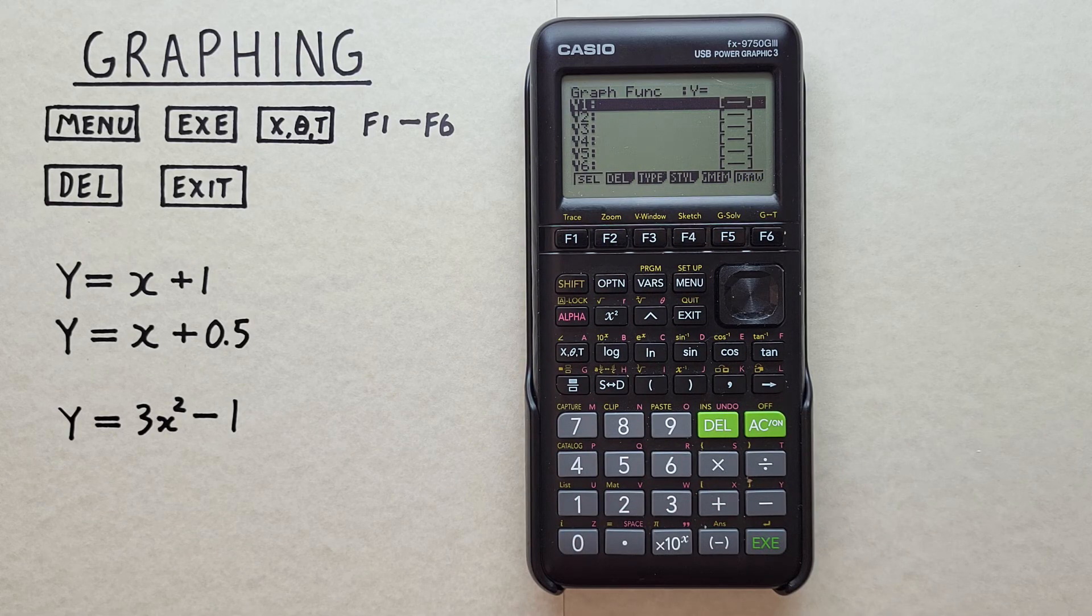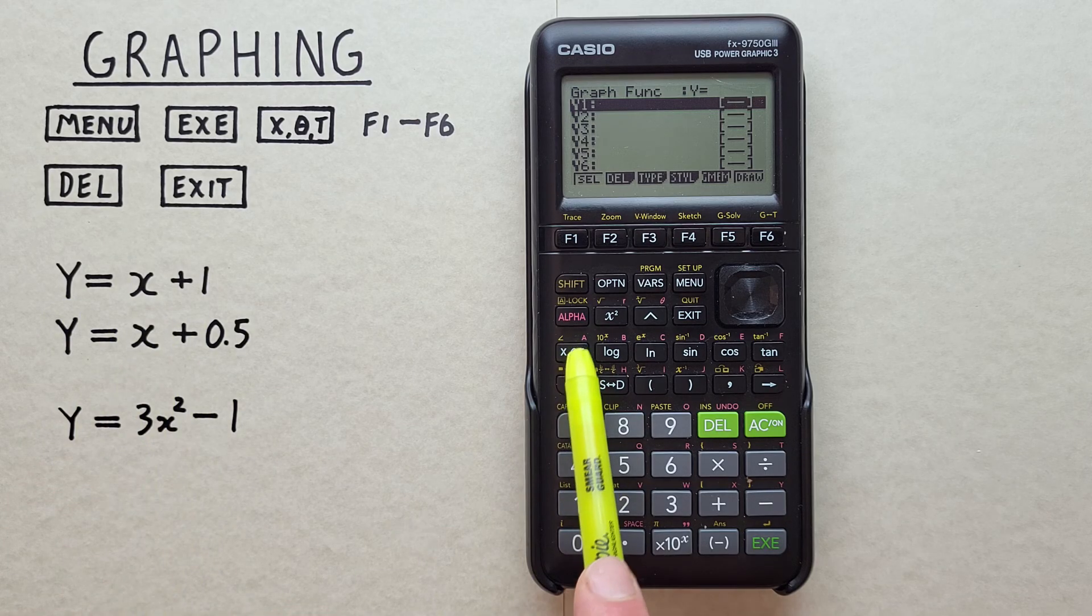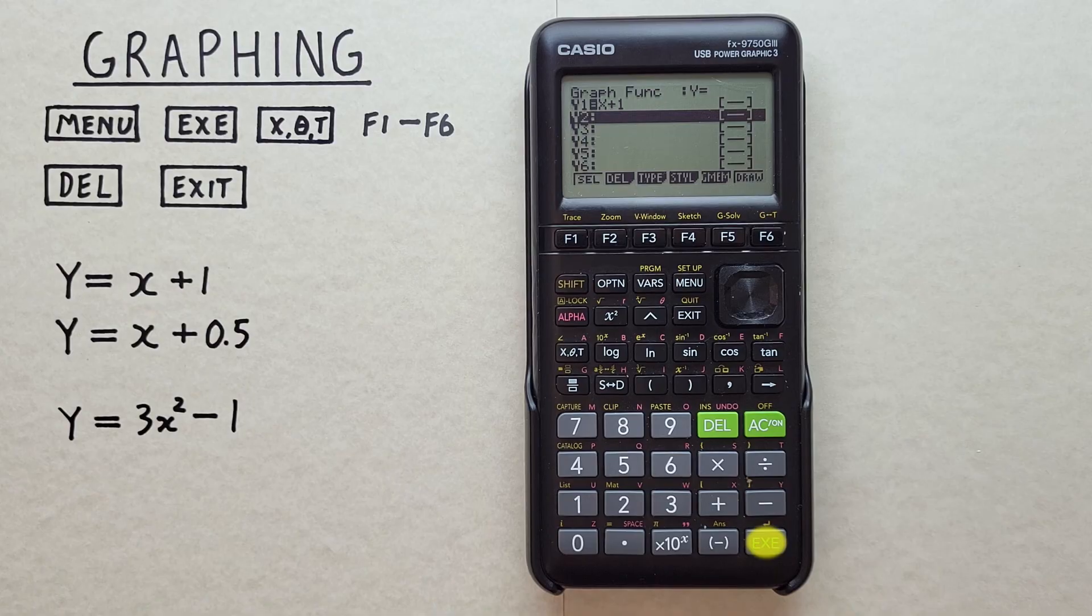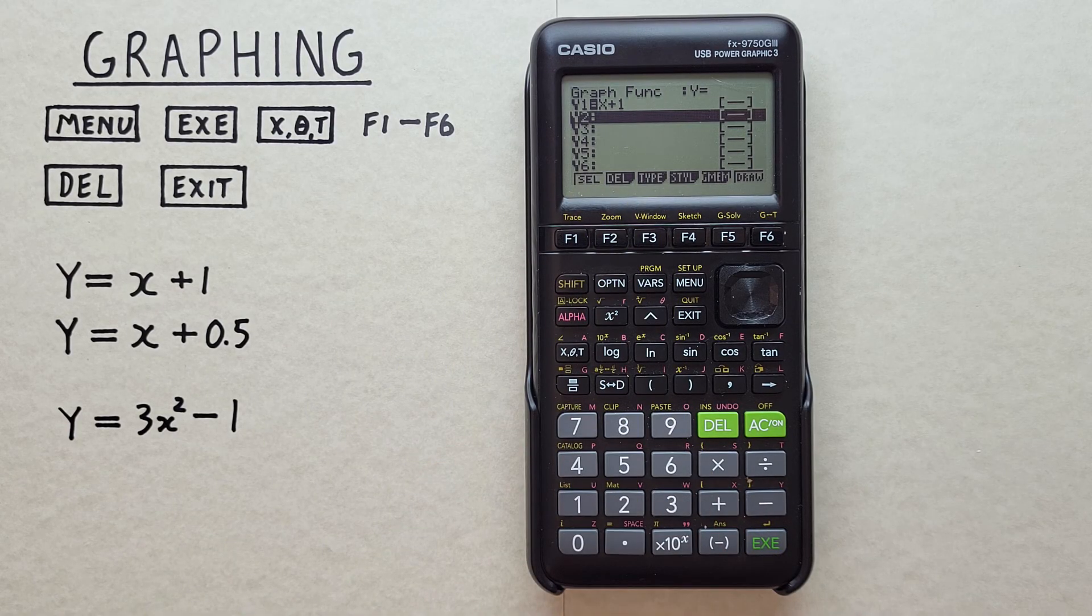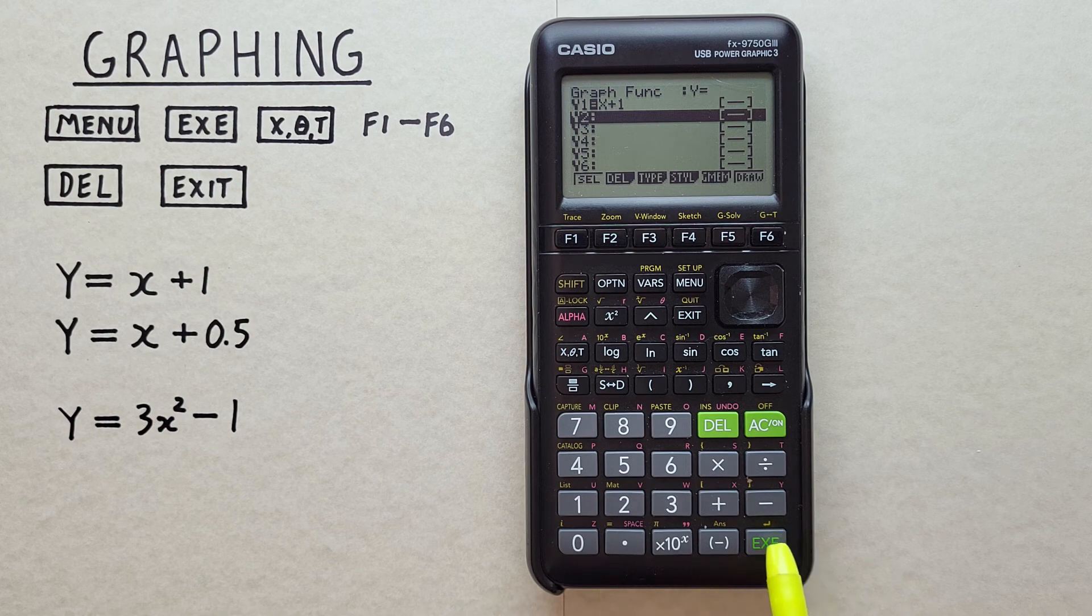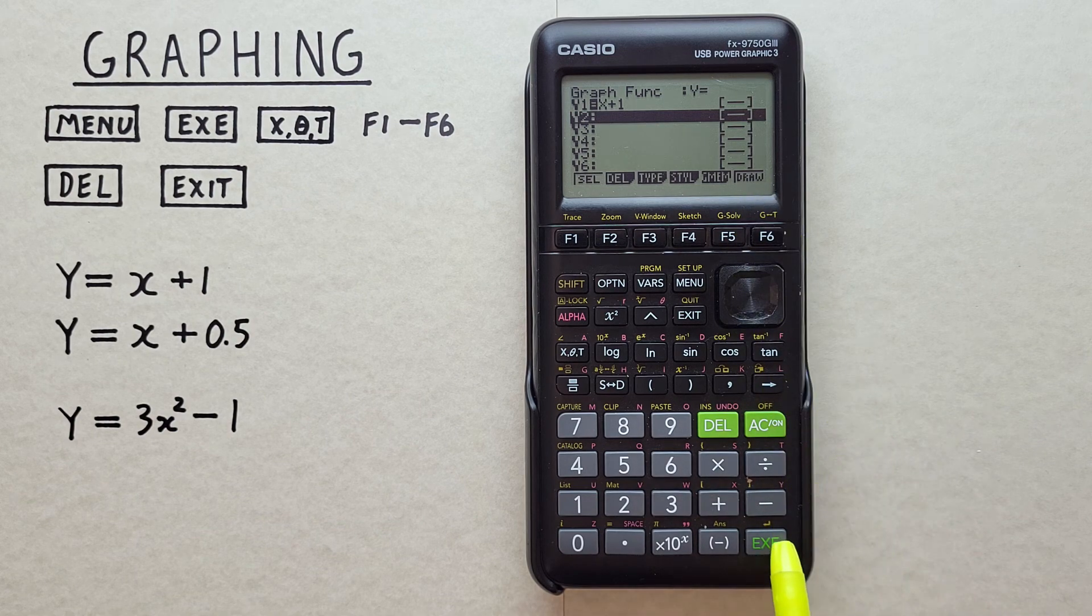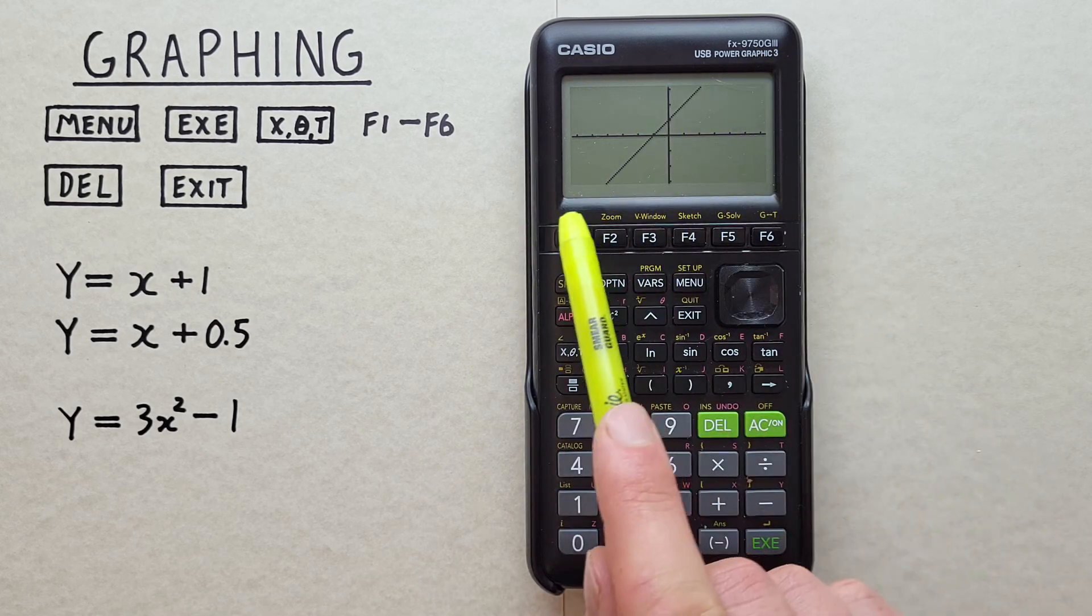We'll start by entering a simple line of Y equals X plus one. So to do that we use the X key here, plus one, and hit EXE. There we go. It's now been entered. If we want to view that graph we can either hit EXE again or F6 for draw. We'll hit EXE. And there we go. There's our line on our graph.